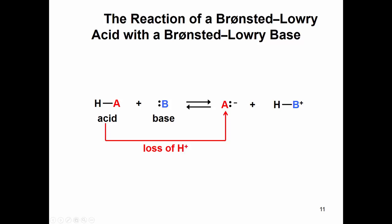There are two ways to sort of look at this. Because I'm an organic chemist, I look at the electrons. Bases are attracted to acids because A is usually something that's electronegative, so it has a partial negative charge and the hydrogen has a partial positive. Lone pairs — like electrons — have a negative or partial negative charge. Opposites attract: negative is attracted to positive.